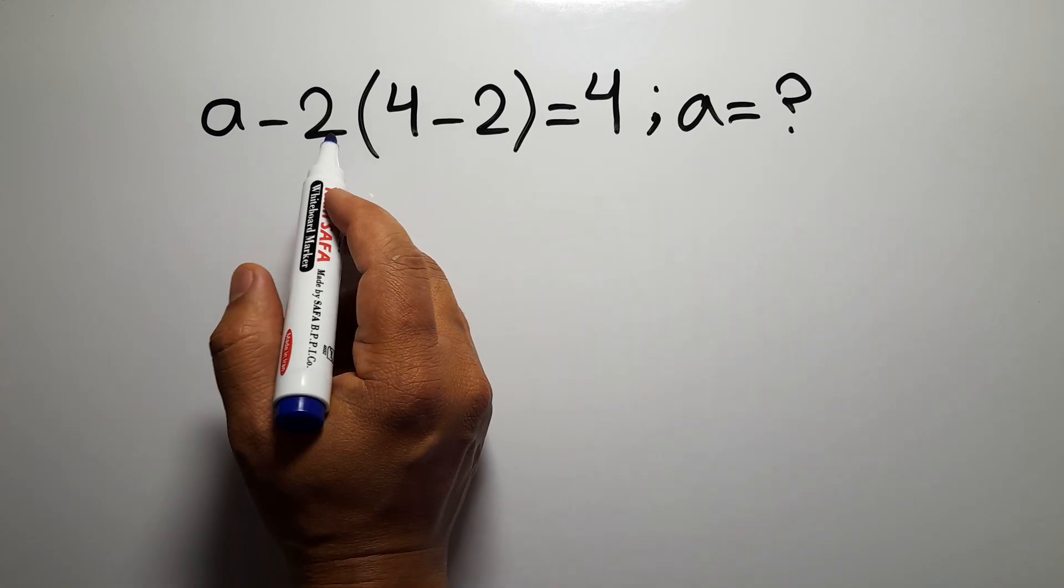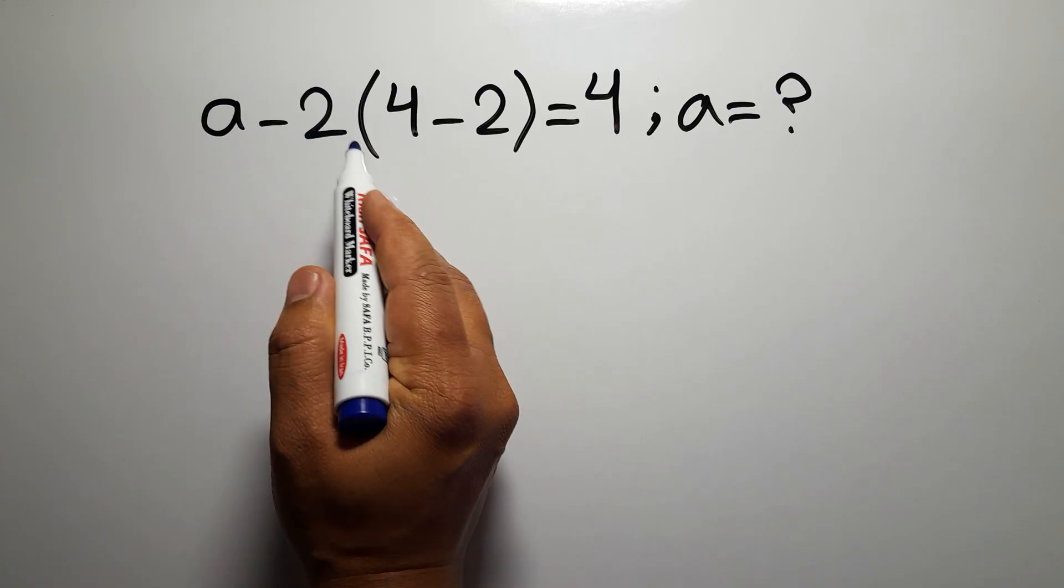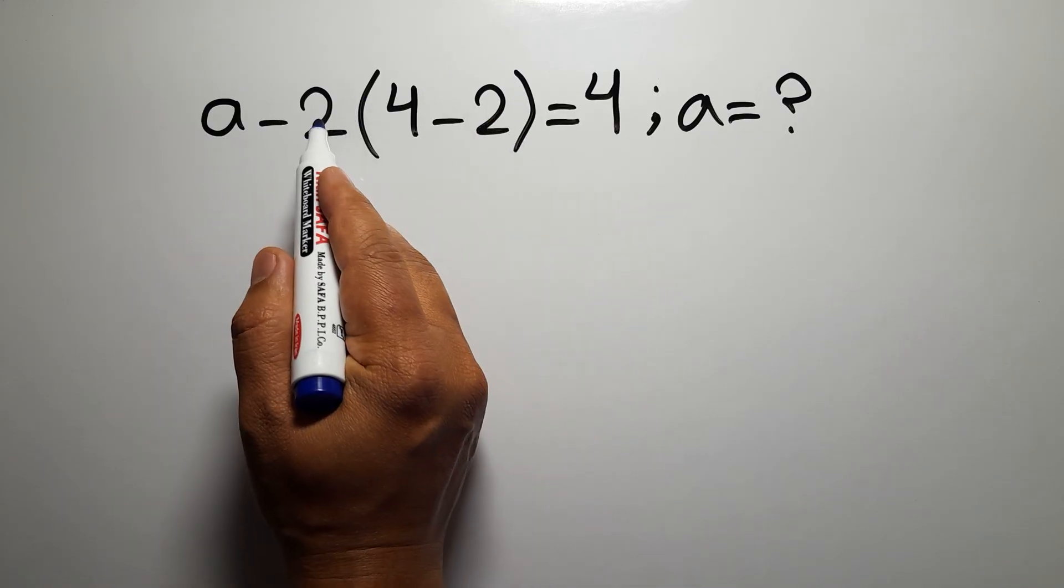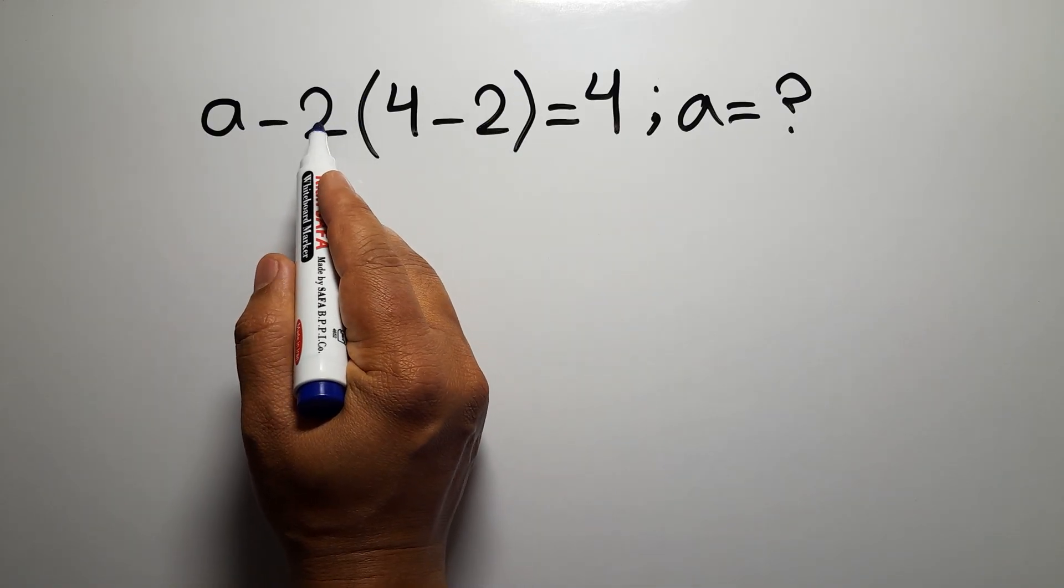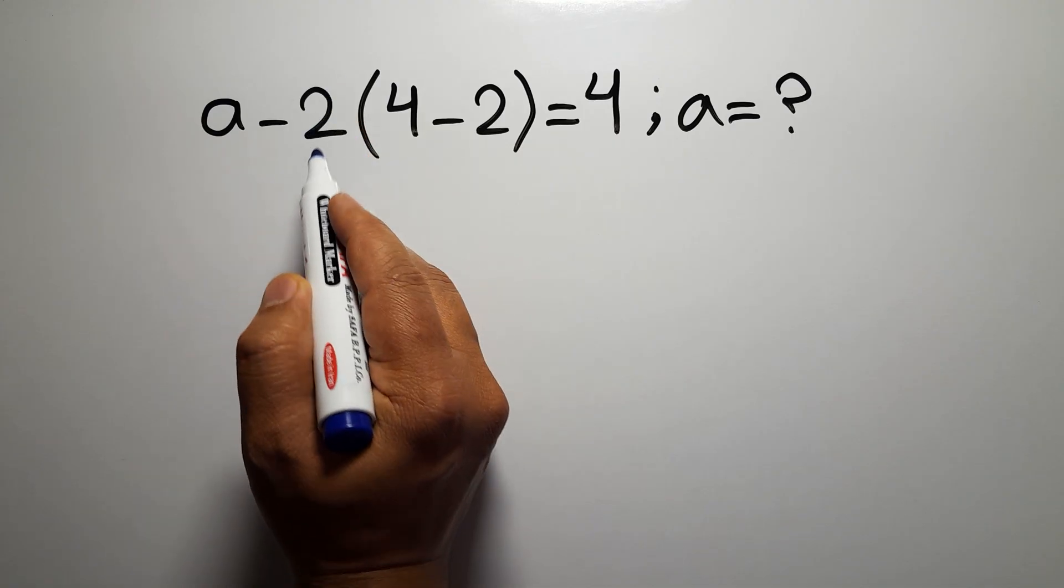We need to pay attention that when a number is placed next to parentheses, it means multiplication, and we usually don't write the multiplication sign for brevity.